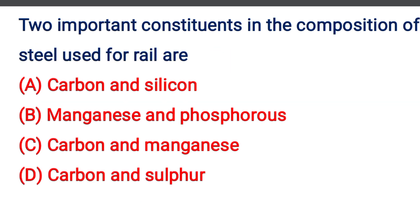Next question: Two important constituents in the composition of the steel used for the rail are — Option A: Carbon and Silicon, Option B: Manganese and Phosphorus, Option C: Carbon and Manganese, Option D: Carbon and Sulphur. The correct answer is Option C: Carbon and Manganese.